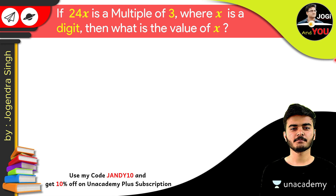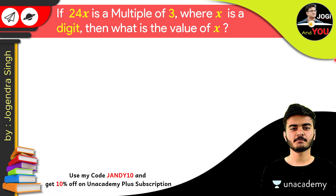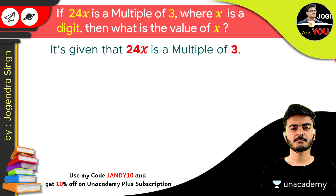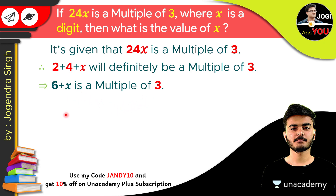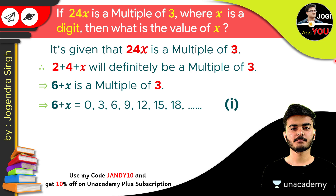So according to this, our number is 24x. That means if 2 plus 4 plus x is divisible by 3, then the whole number is also divisible by 3. It's given that 24x is a multiple of 3, so 2 plus 4 plus x — that is 6 plus x — will definitely be a multiple of 3. So 6 plus x must equal 0, 3, 6, 9, 12, 15, 18, and so on. This is the first condition of the question.